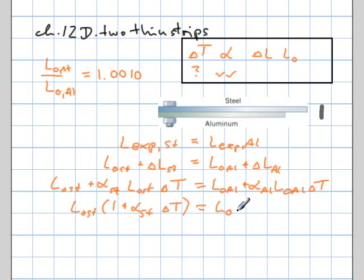And here I do the same thing. I'm able to factor out the aluminum, original length of the aluminum, and therefore what stays behind is 1 plus the alpha of the aluminum times delta T.